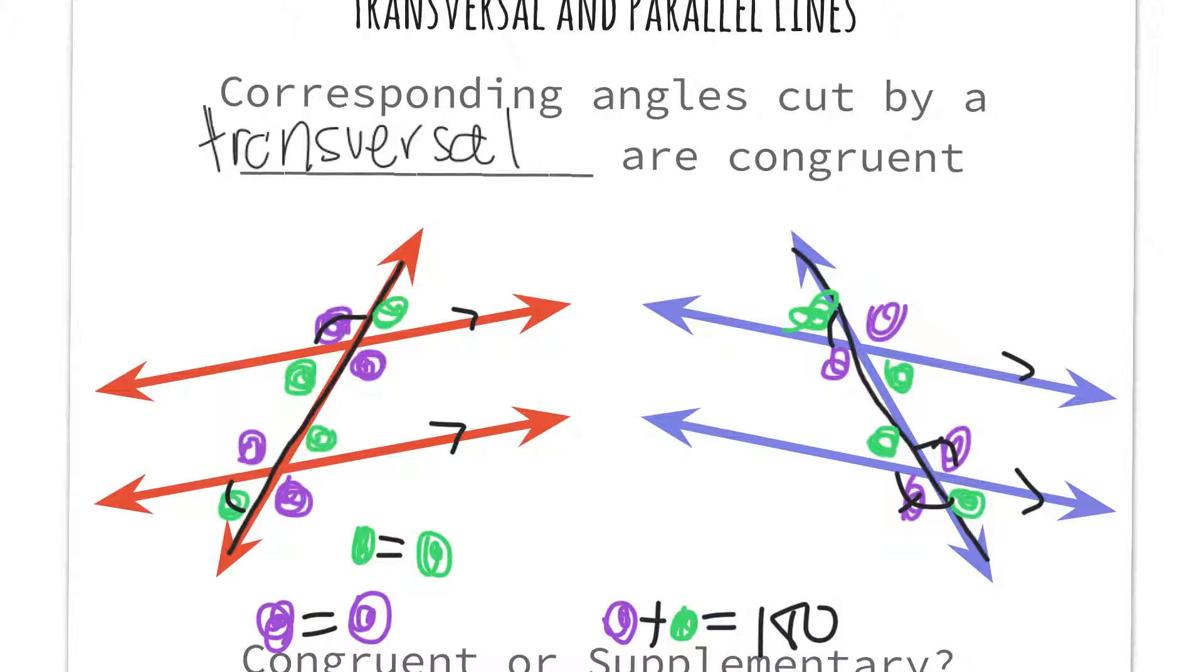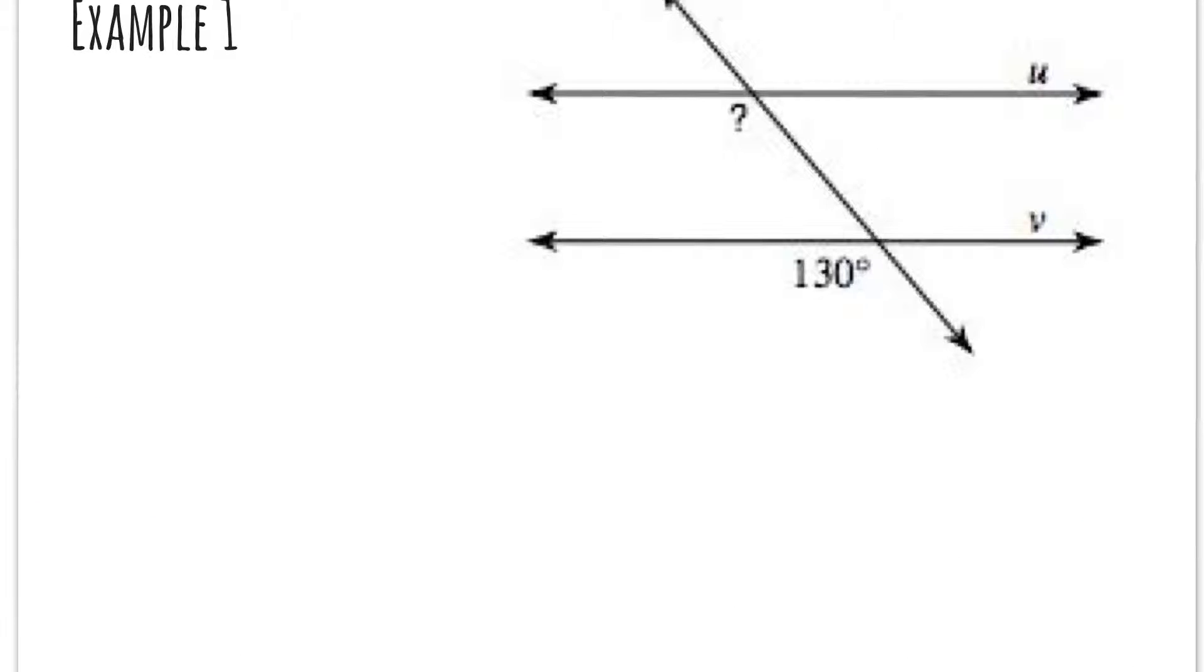Let's come to a couple examples. First thing I like doing is I label everything I know. So purple, purple, purple, purple. I'm assuming these two lines are parallel. And then green, green, green, green.